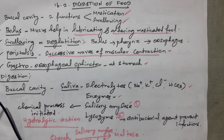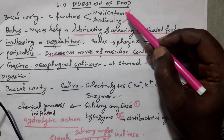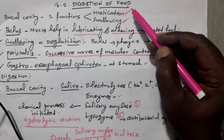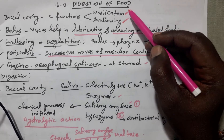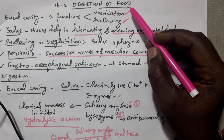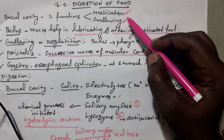The main things are where digestion happens, and what food materials are digested by enzymes. First, it starts with the buccal cavity. The buccal cavity has two functions: one is mastication — crushing the food material — and second is swallowing, and the buccal cavity helps facilitate swallowing.